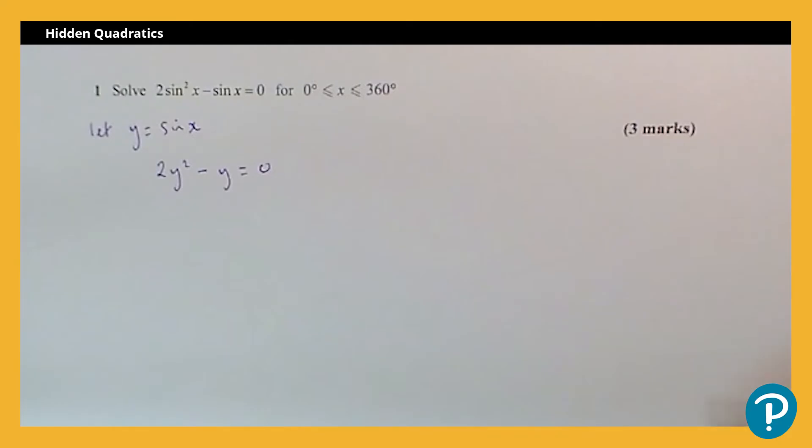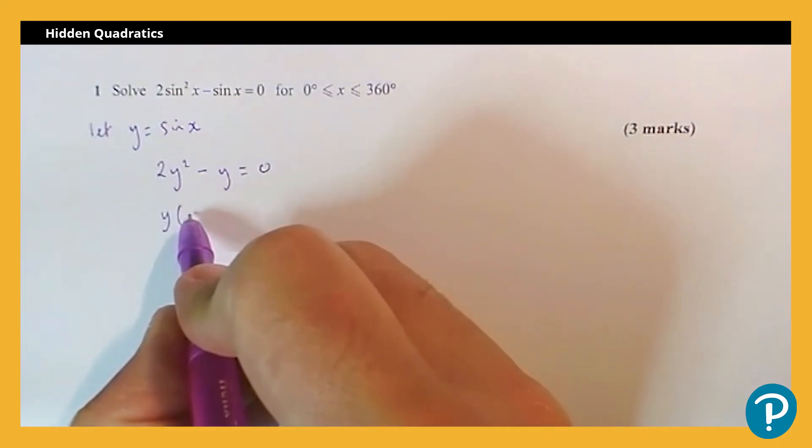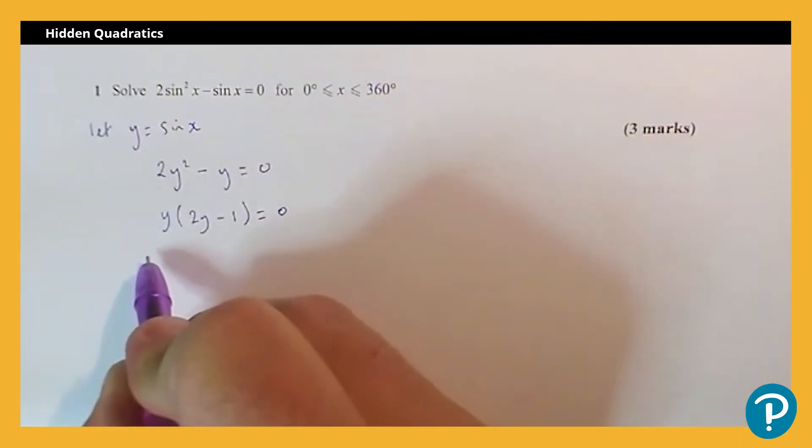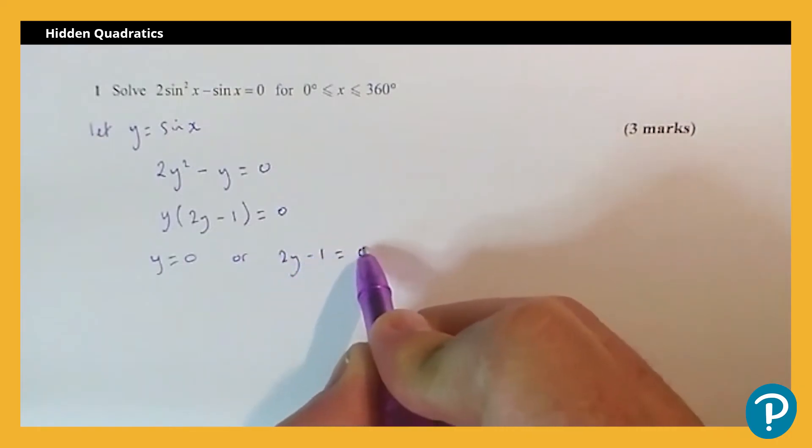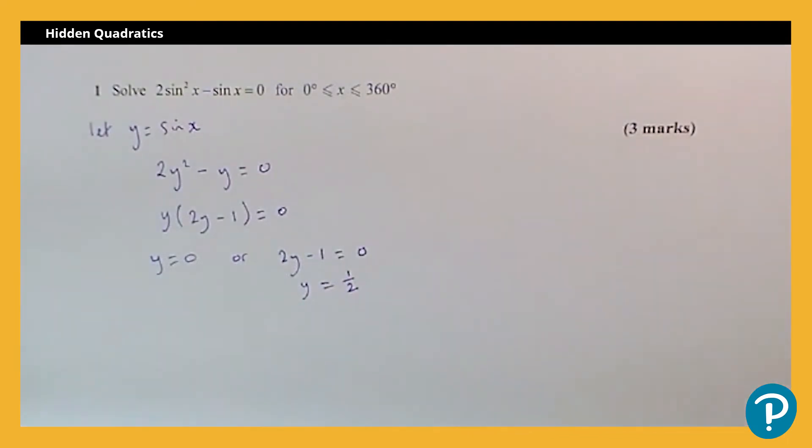Which is a quadratic and we can solve quite easily. It's a simple one to factorize. We have y(2y - 1) = 0, so that would lead to y = 0 or 2y - 1 = 0, which means that y = 1/2. So I've now got my two solutions to my quadratic equation.